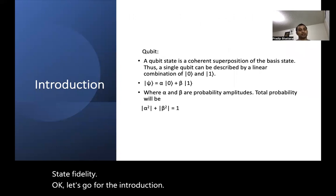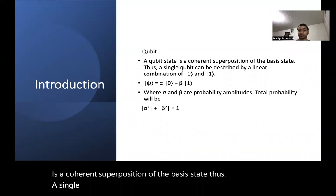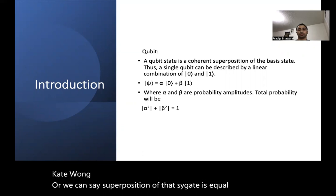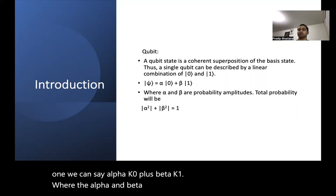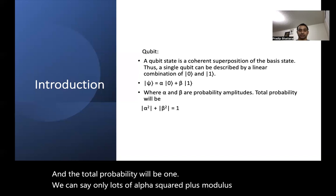A qubit state is a coherent superposition of the basis states. A single qubit can be described by the linear combination of |0⟩ and |1⟩, or superposition: |ψ⟩ = α|0⟩ + β|1⟩, where α and β are the probability amplitudes. The total probability will be 1, i.e., |α|² + |β|² = 1.